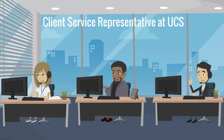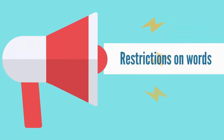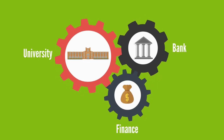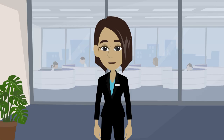A fictitious business name is frequently referred to as a DBA, and vice versa. Some states also have restrictions on words that can be included in the name, such as 'university,' 'finance,' or 'bank.' United Corporate Services maintains a list of restricted words that would be beneficial for you when determining your name.